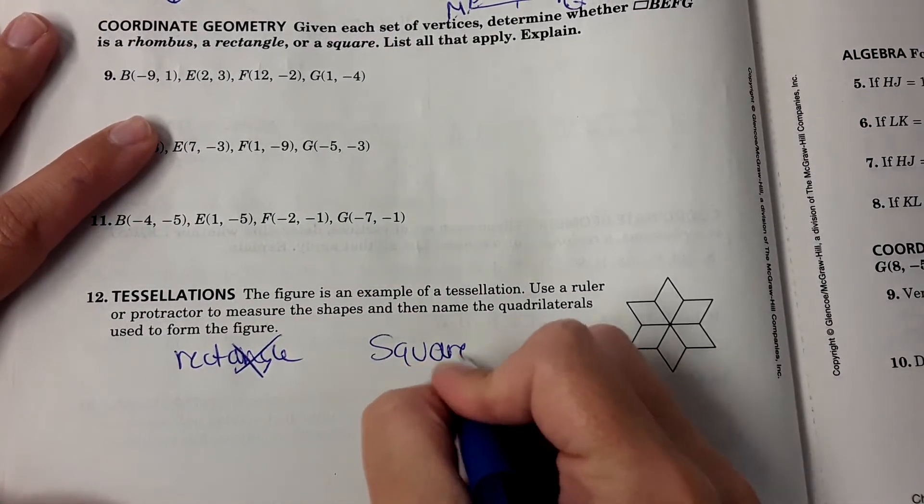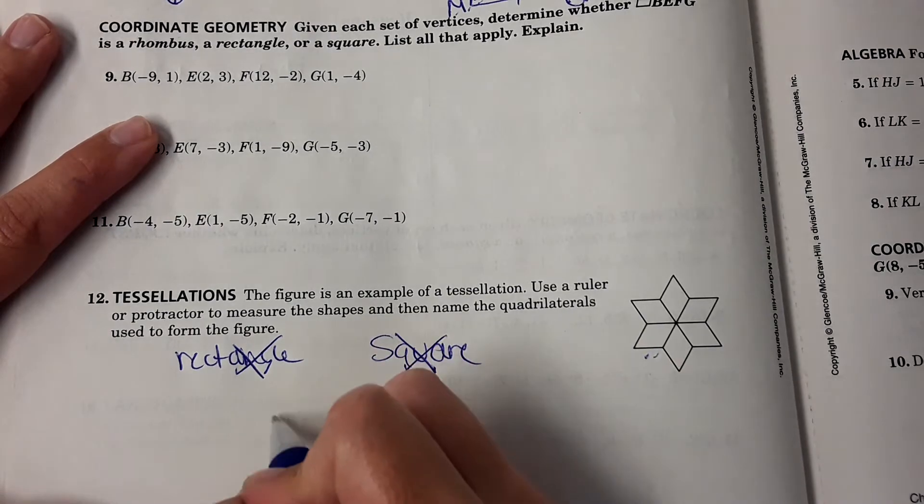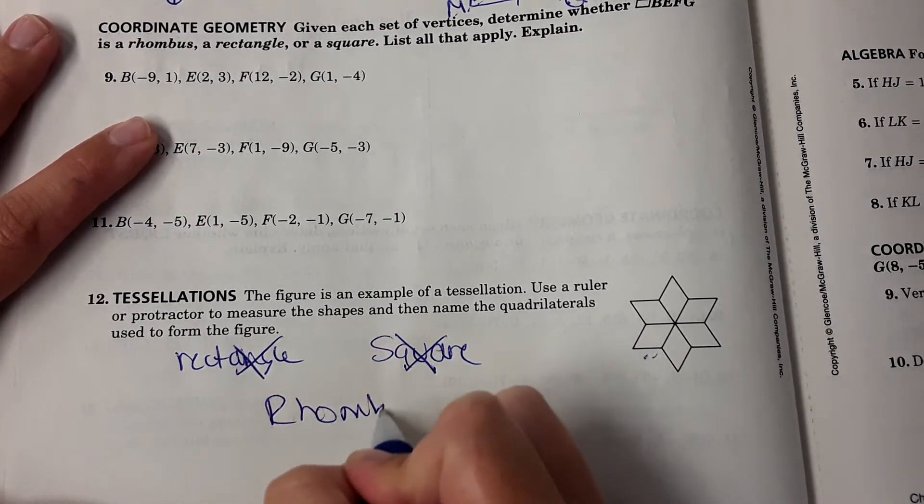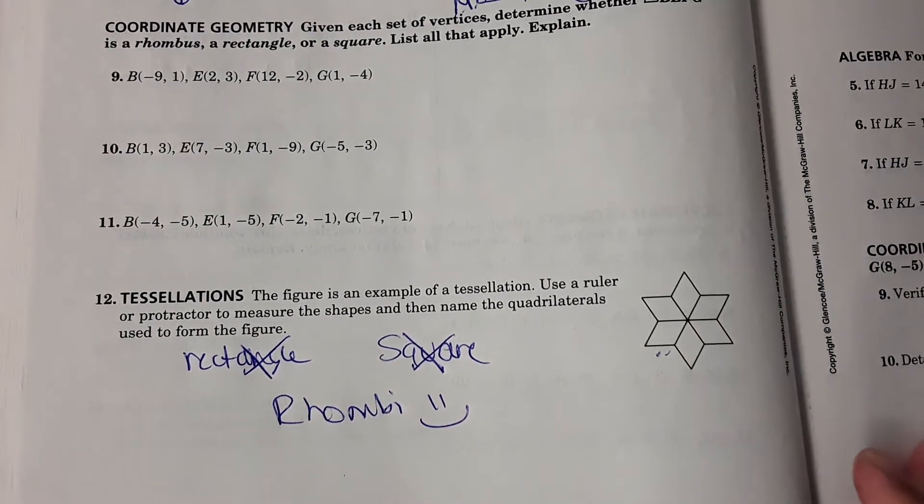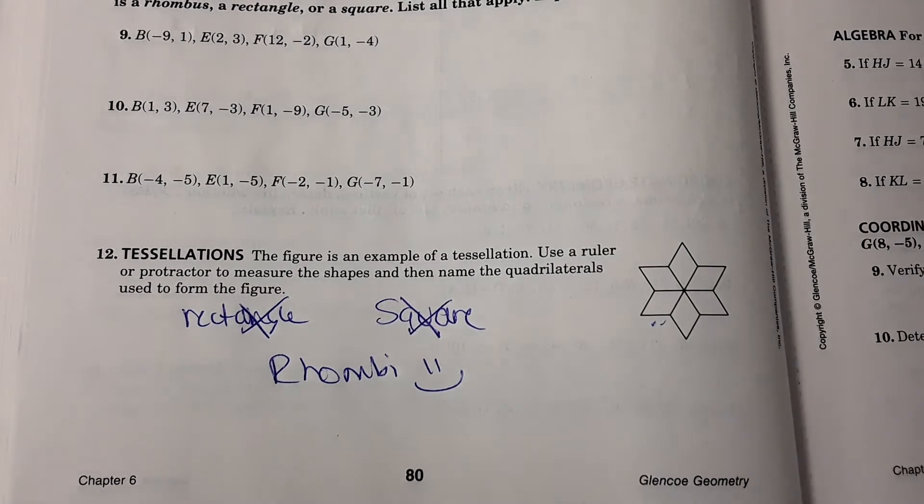It could be a square. Are they squares? No. So they're rhombi. And that's it.